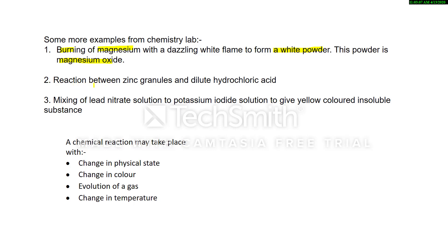The next example is the reaction between zinc granules and dilute hydrochloric acid. This is a metal, and when a metal reacts with dilute acid it produces hydrogen gas. A new substance is formed, so this is a chemical change or chemical reaction.